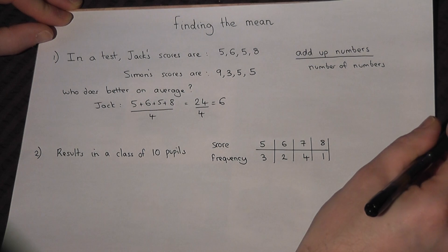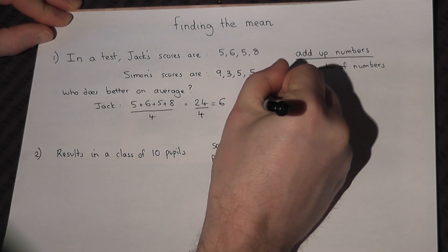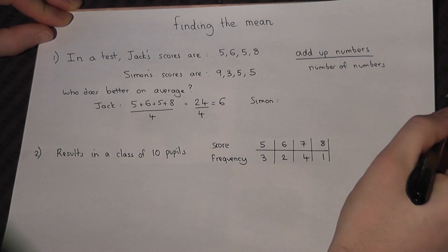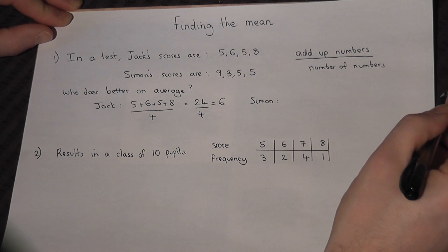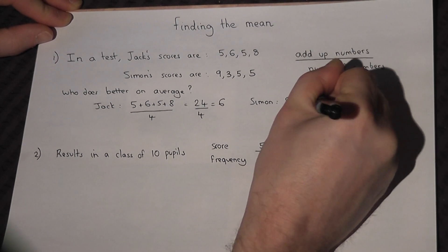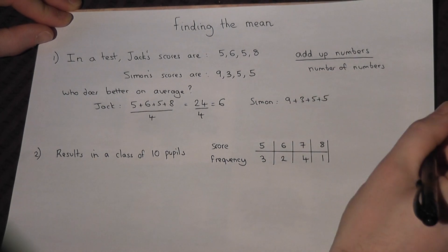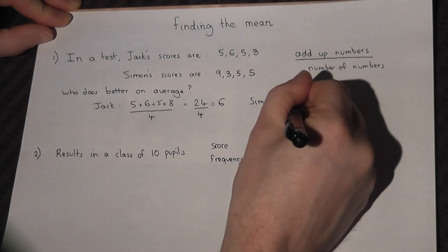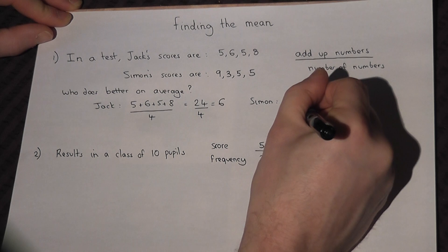Now then, Simon, he's got 9, 3, 5 and 5, so we do 9 plus 3 plus 5 plus 5. Again, there are only four scores there, so divide by 4.